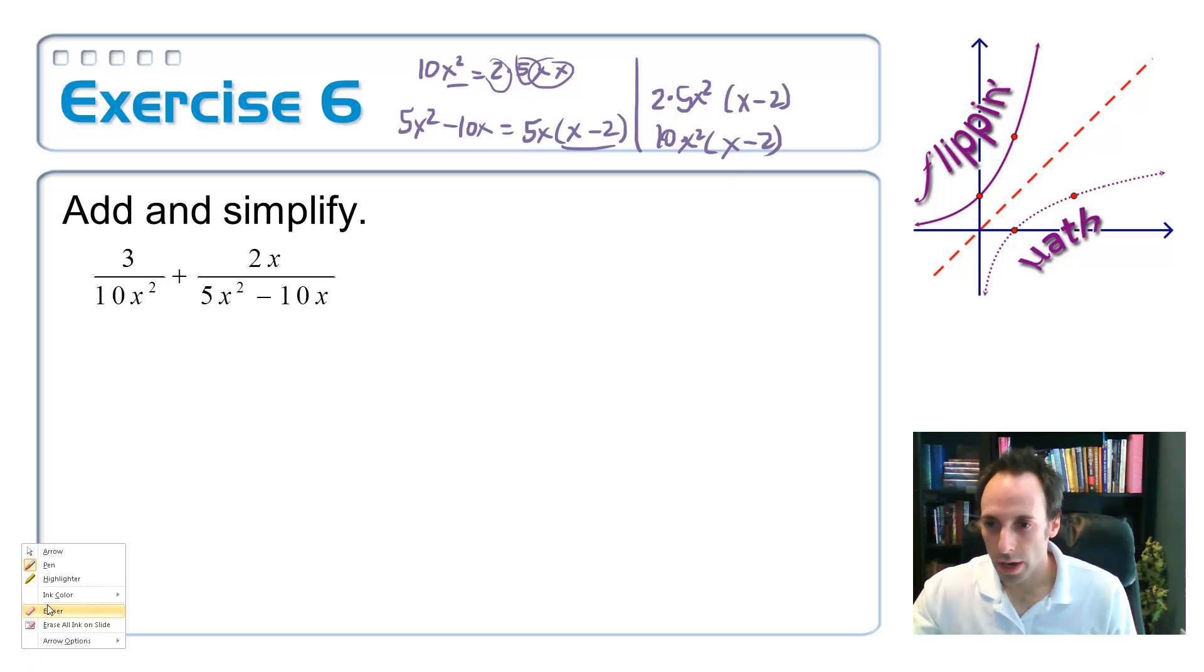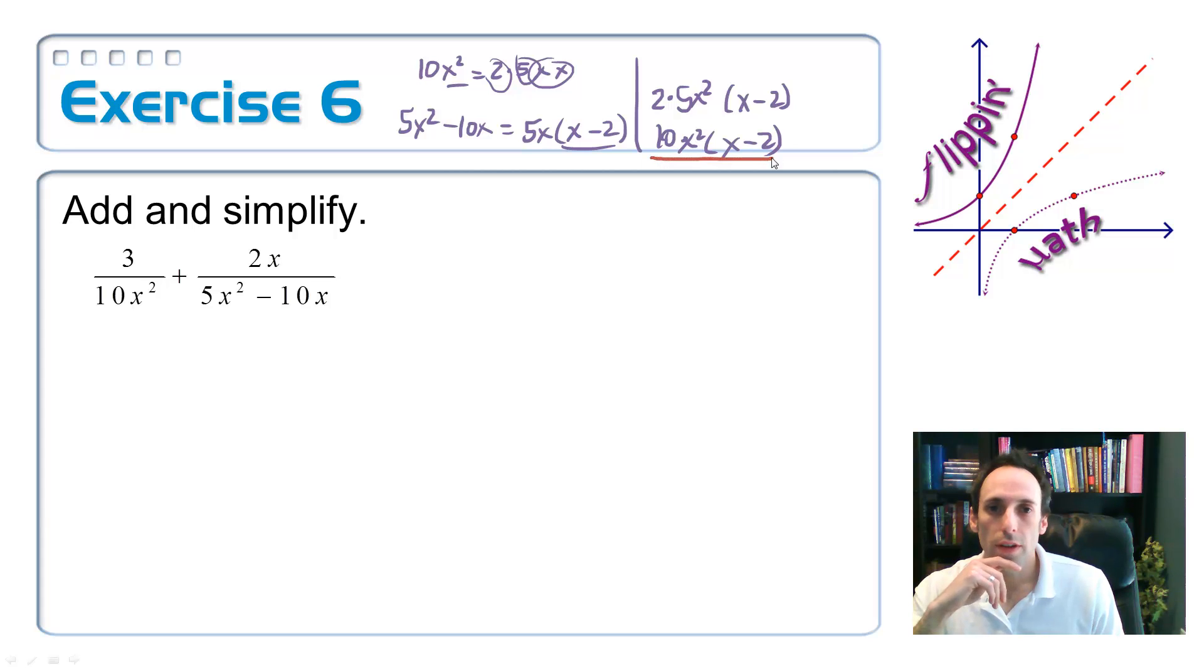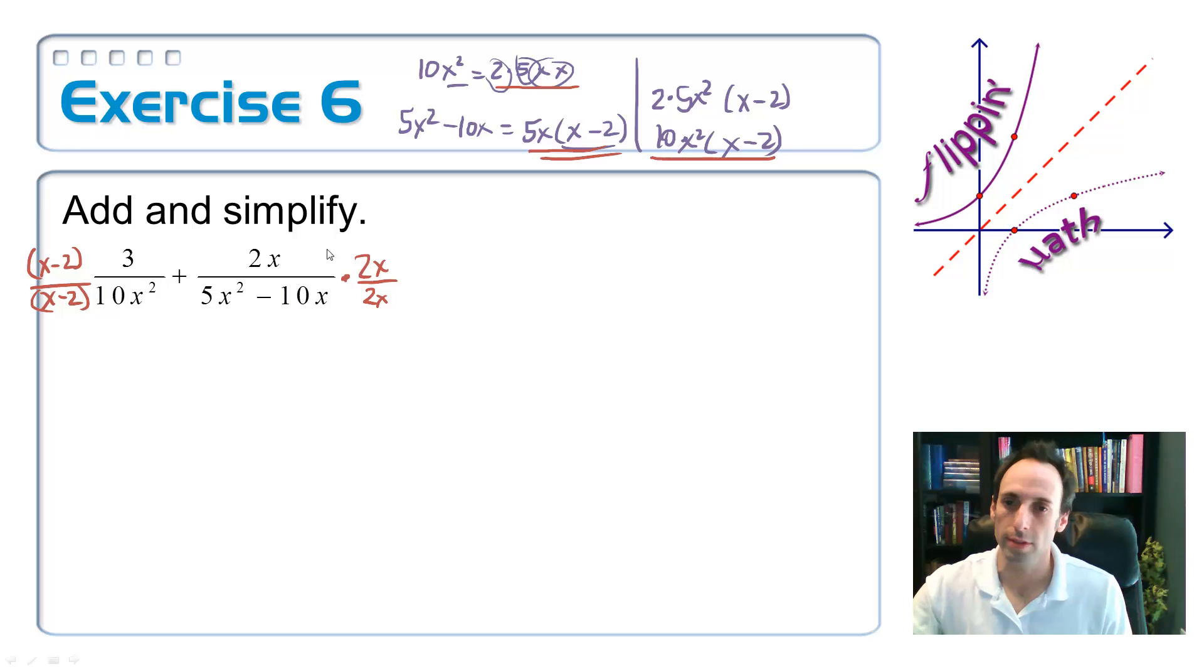Let's switch colors here and determine what we're going to have to multiply the top and bottom on each one of these fractions so that we can add them together. Looking at what we have here and comparing it to the prime factors of the first one, what I'm missing is a factor of x minus 2. So, I need to multiply this by x minus 2 on the top and the bottom. And what am I missing from the second one? I have a 5 in there, so I'm missing a 2, and I'm missing a factor of an x. So, I need to multiply the top and bottom by 2x. 2x has absolutely nothing to do with the fact that there was a 2x already on the top there. It was a total coincidence.